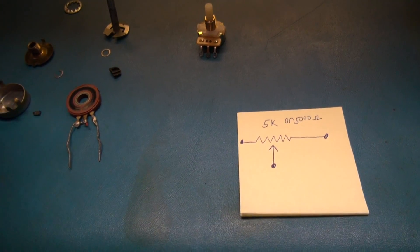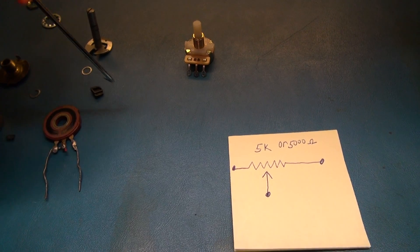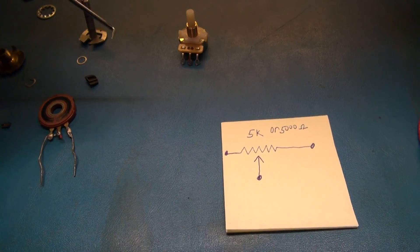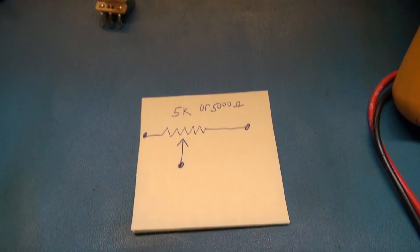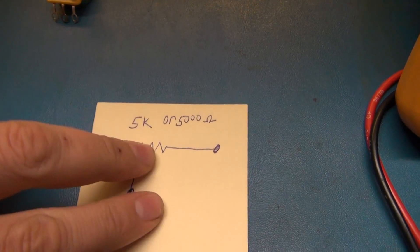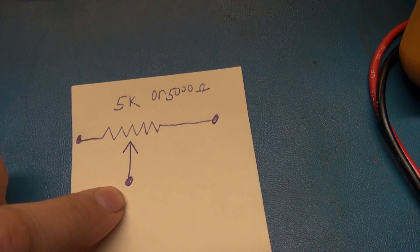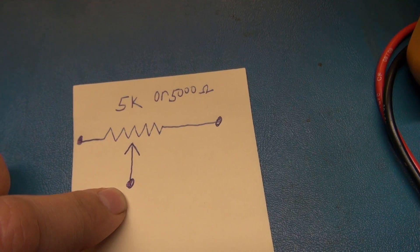Okay, today we want to talk about potentiometers: testing, cleaning, and what to do if you have a scratchy pot, and how they work. I have a schematic diagram of a 5k or 5,000 ohm potentiometer.